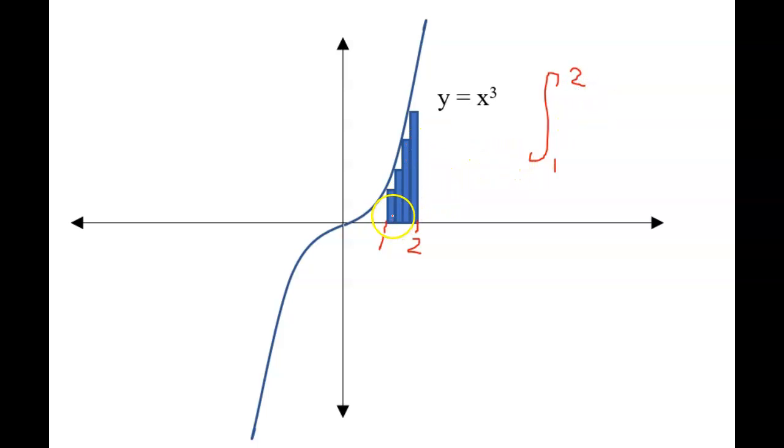And the width—let's look at the area. We need to add up an infinite number of areas. Now, each of these rectangles has a width of dx and a height of x cubed. So we would say x cubed dx.